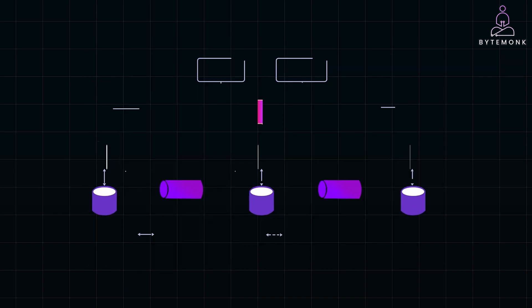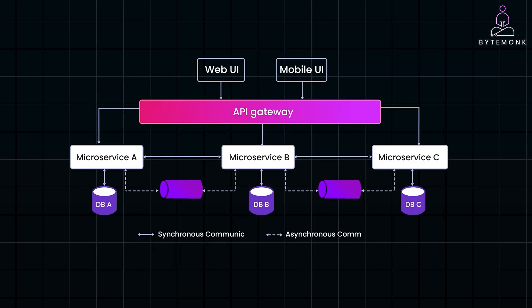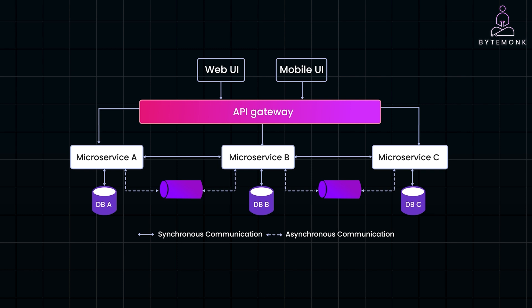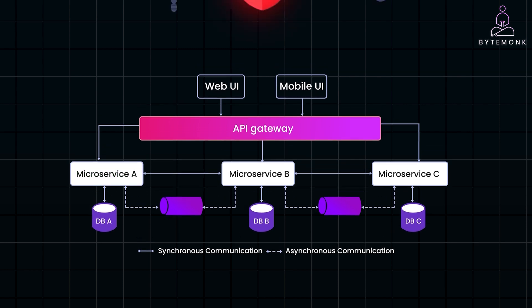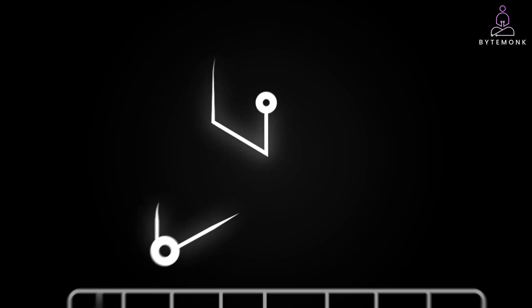The API Gateway pattern facilitates faster processing, decreases load time, and optimizes resource utilization. In addition, the API Gateway ensures that the client only accesses one service instead of multiple microservices, reducing the risk of DDoS attacks.